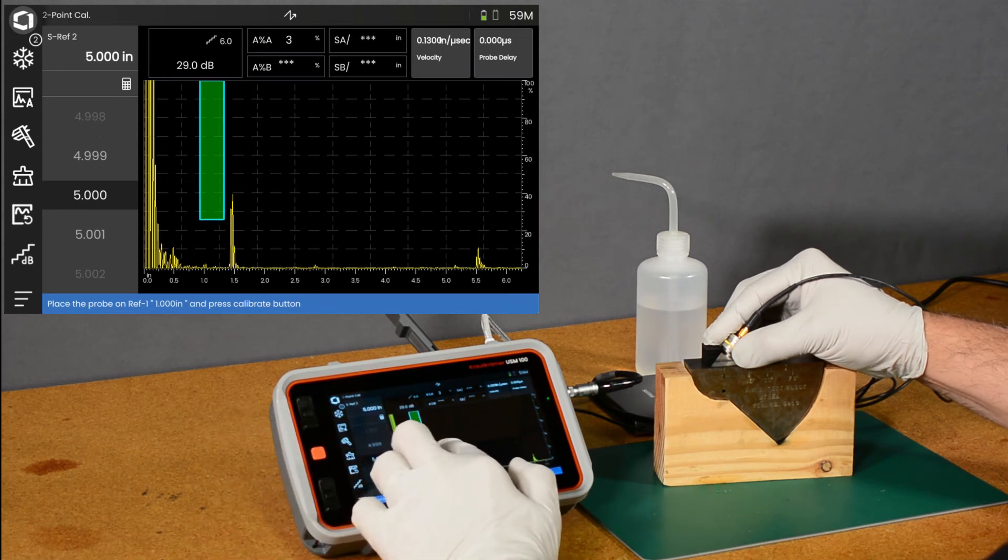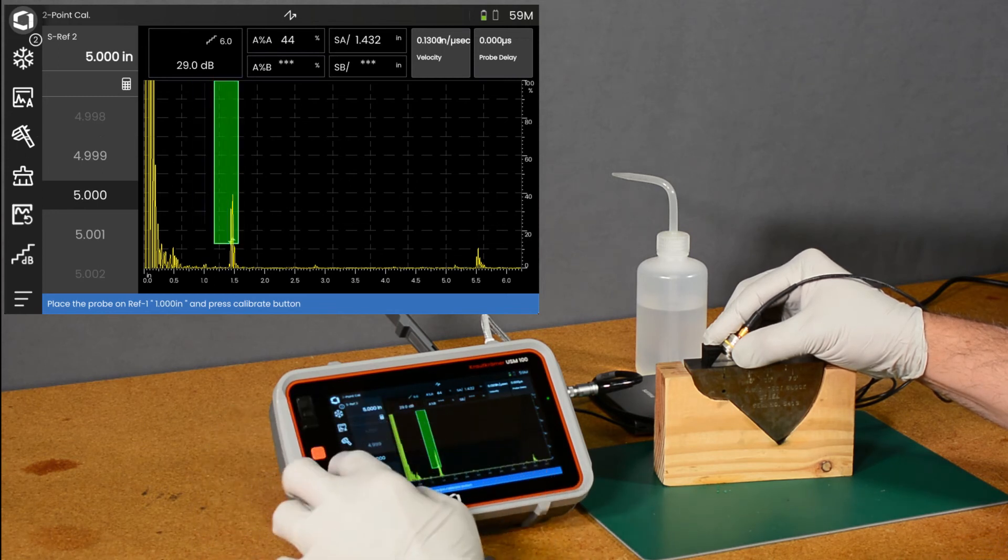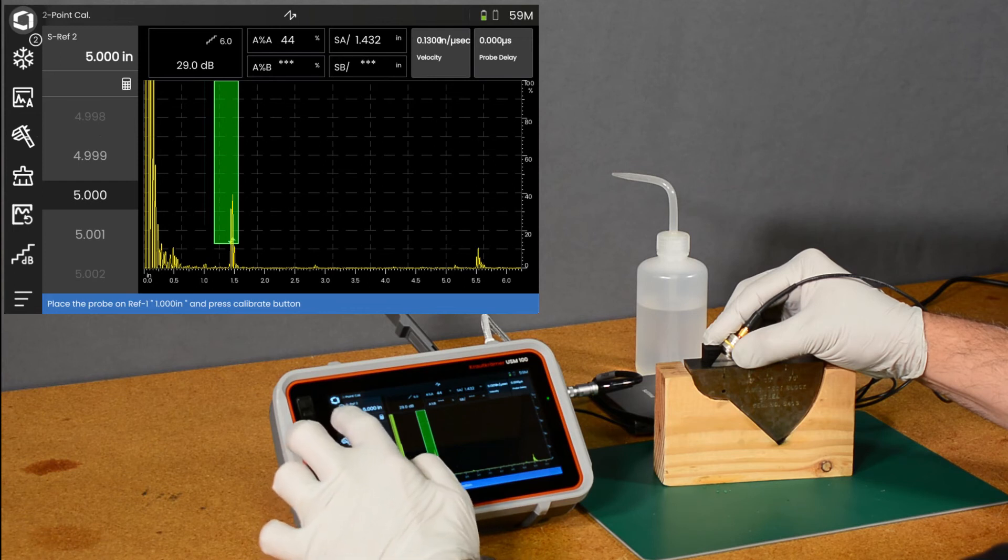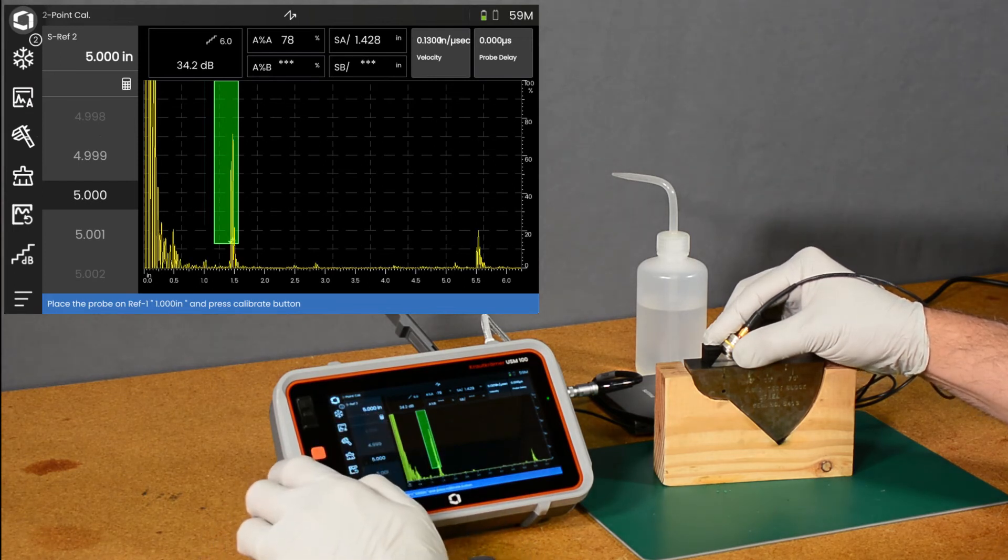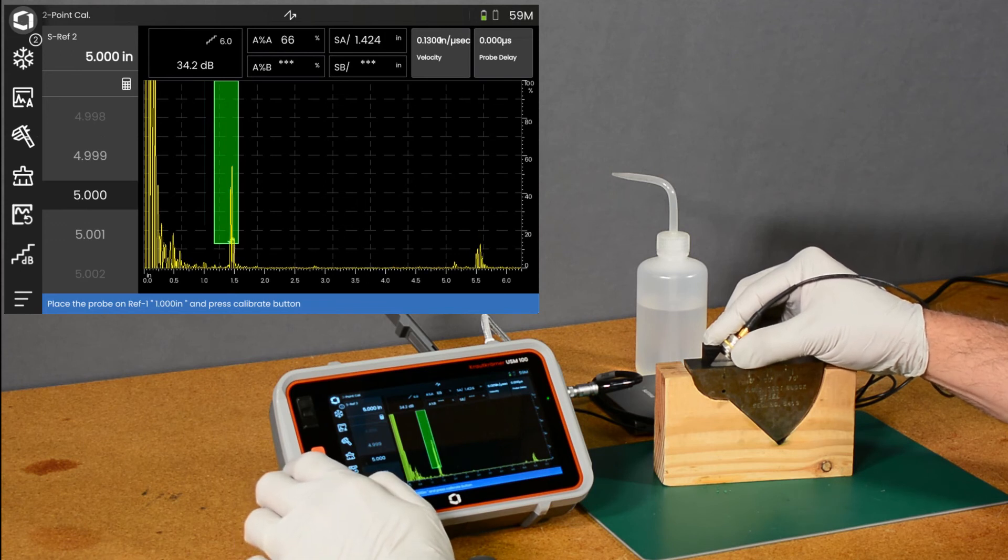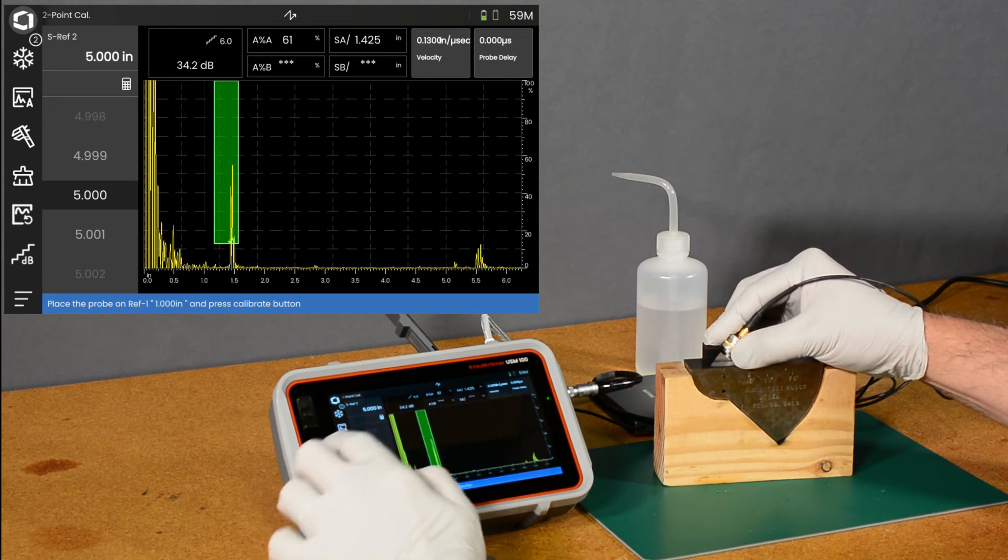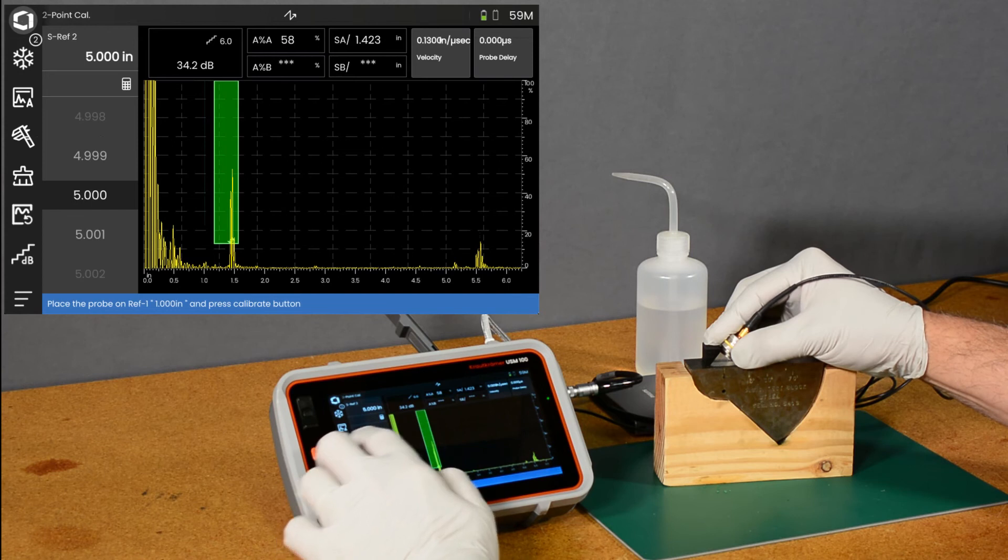we can drag our gate over the echo and let's get that up to 80% screen height. We'll use the auto 80 feature to bring that up. Get it peaked up there. Okay.